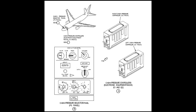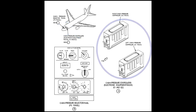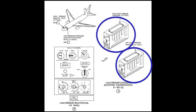The CPCS system consists of a flight deck selector panel and two cabin pressure controllers located in the electronics equipment racks E1 and E2. There are two controllers — one is the primary while the other is used for redundancy.